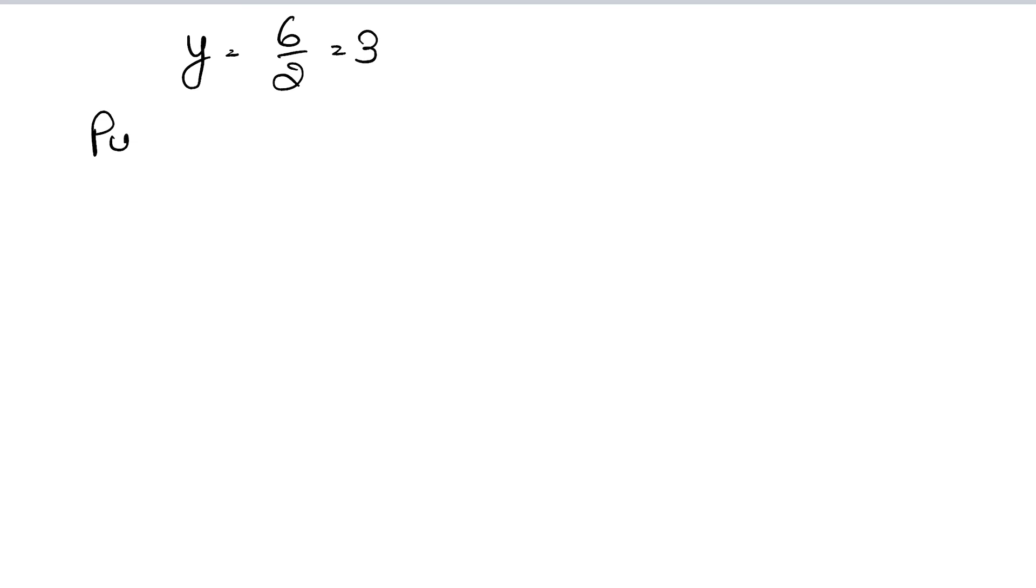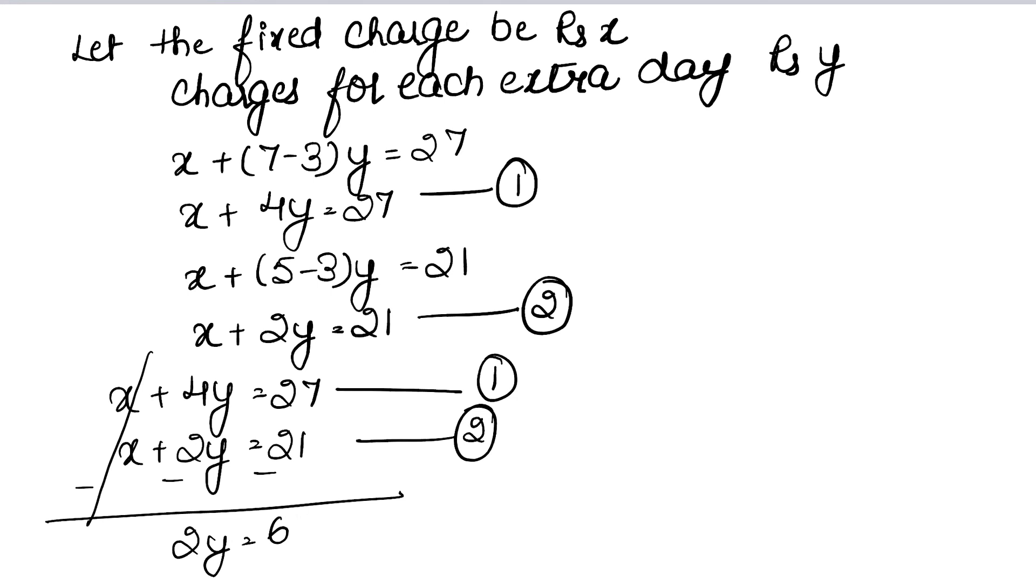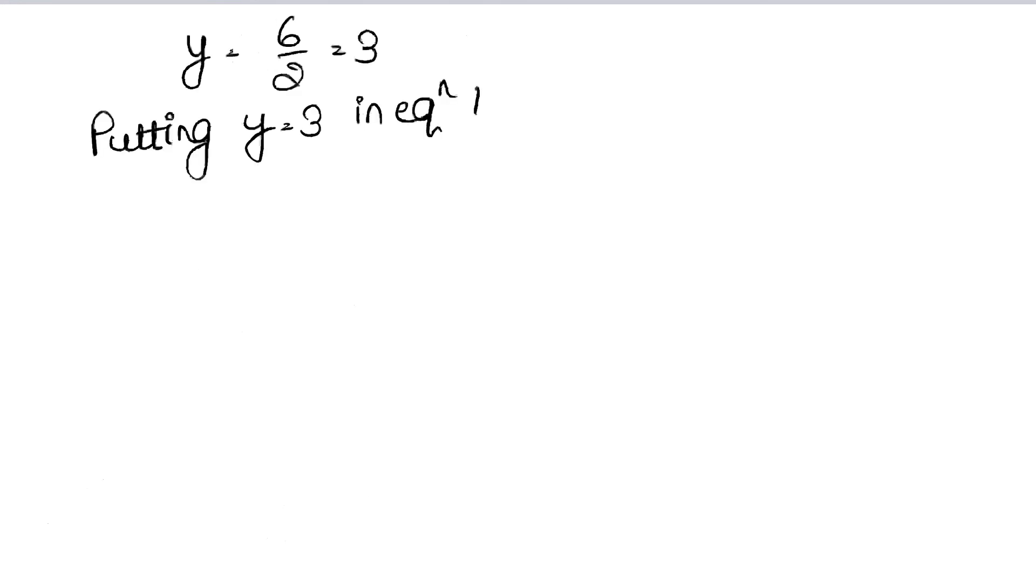Now putting y equals 3 in equation 1. What was equation 1? x plus 4y equals 27. So x plus 12 equals 27.